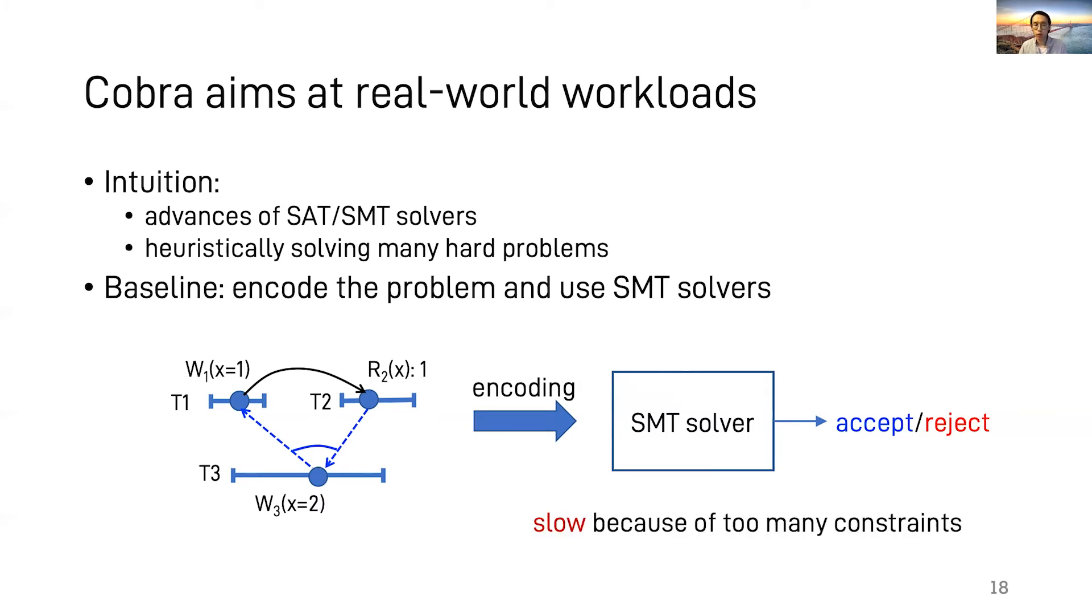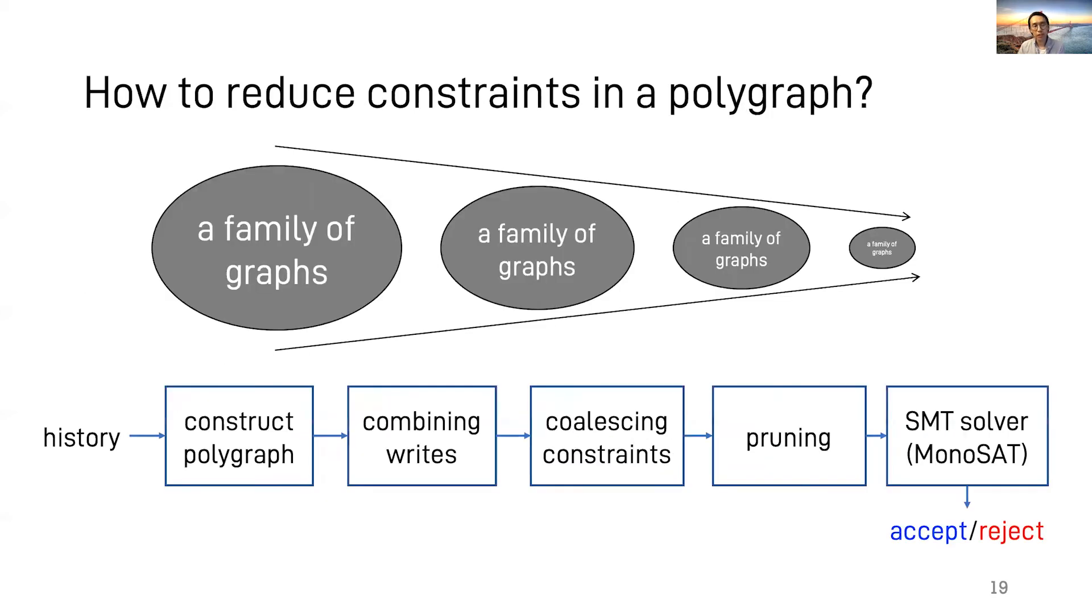However, for relatively large workloads like a history with 10,000 transactions, this approach takes hours to finish. This performance challenge comes from constraints. Constraints have a quadratic growth versus the number of transactions. Also, more constraints means more choices, which further complicates the solving procedure. So the question is, how to reduce the number of constraints in a polygraph?